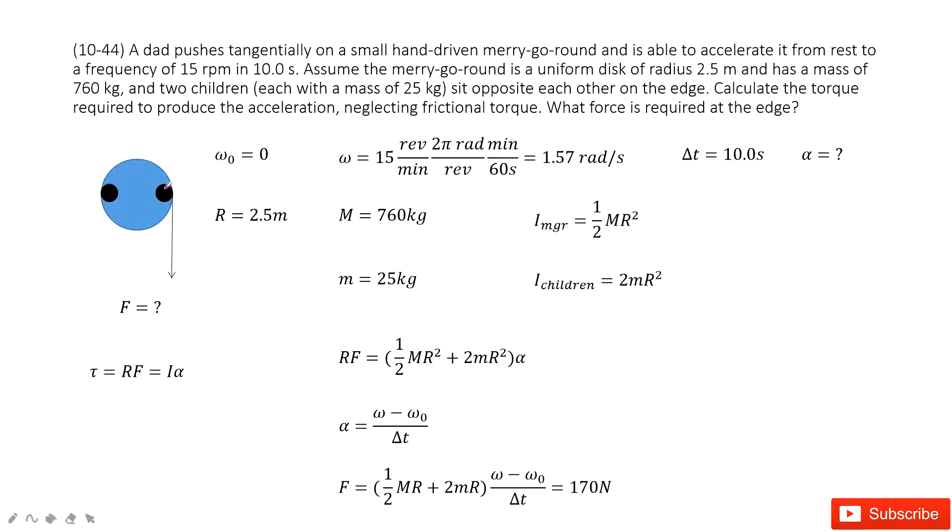this is a merry-go-round and two children on it. As a dad acts a force F. This one we don't know. We need to find it on this merry-go-round. And then what happens? This merry-go-round will rotate, right? And initially,